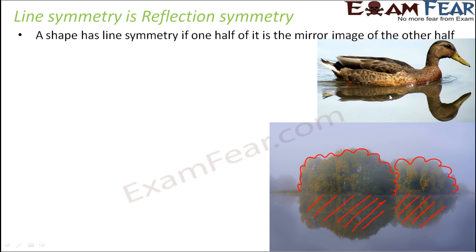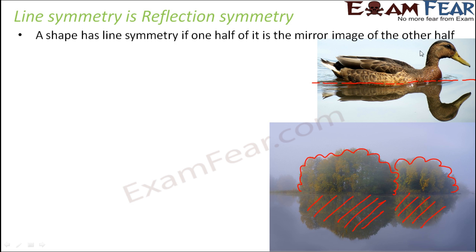Even though mirror images are exactly identical, imagine this duck is a painting on a sheet of paper. If you imagine a line and fold the paper along this line, these two halves would exactly overlap each other — and that's how we can say this line is a line of symmetry. This tells us that the two equal halves are just like mirror images, which are exactly identical but laterally inverted, and that is why when you fold them they exactly overlap each other.